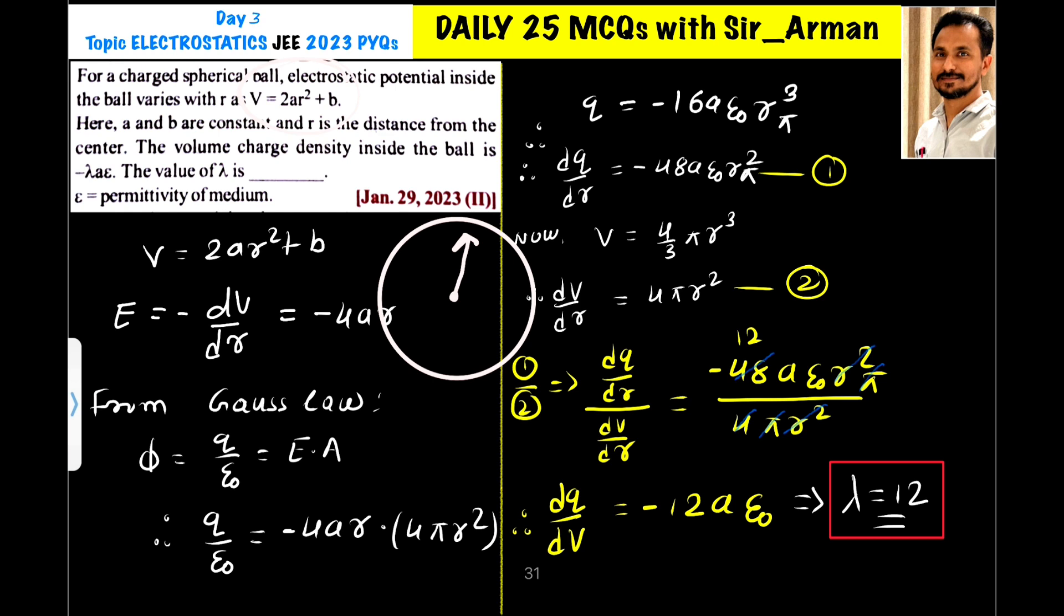Now, the volume charge density inside the ball is minus λAε₀, where we have to find λ.